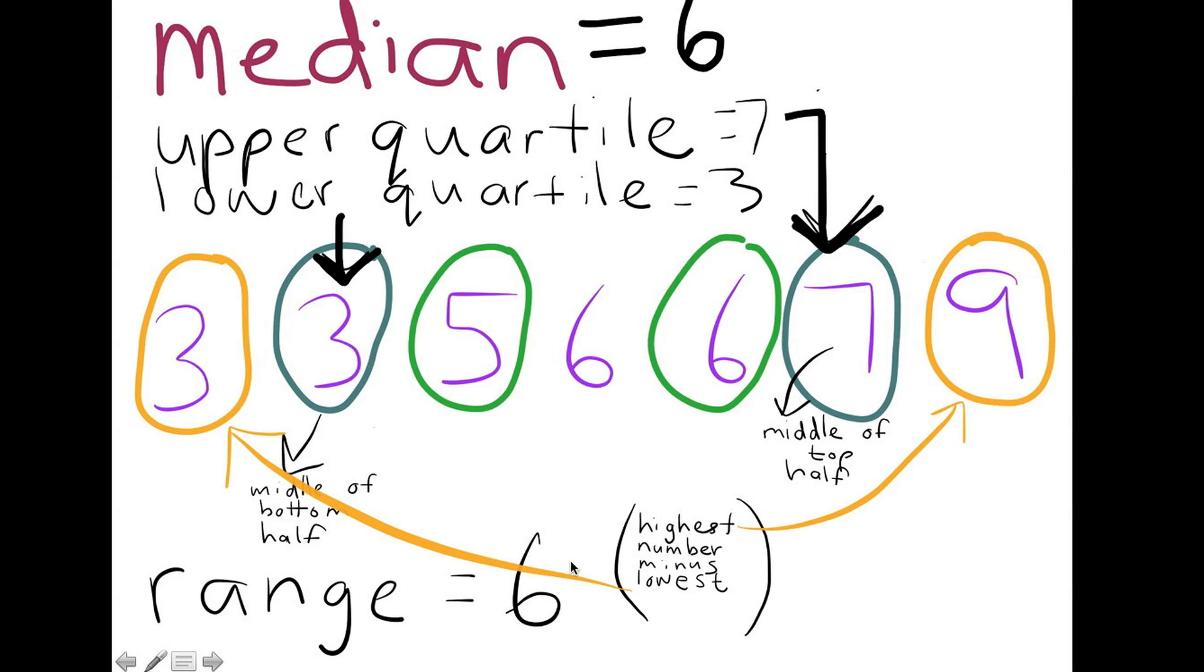Finally, the range in this case is six because the highest number is nine and the lowest number is three. And to calculate the range, I subtract the lowest number from the highest number, which gives me six.